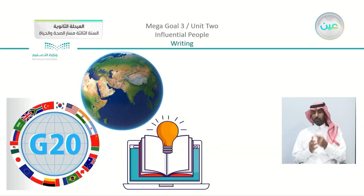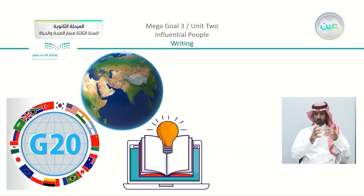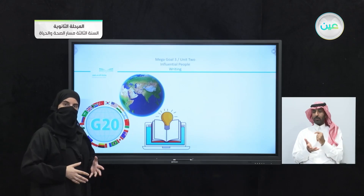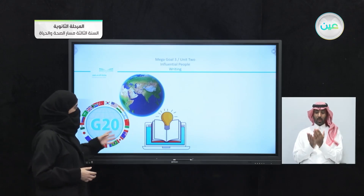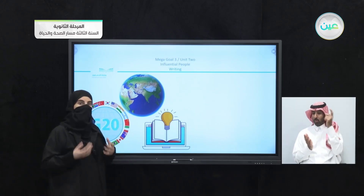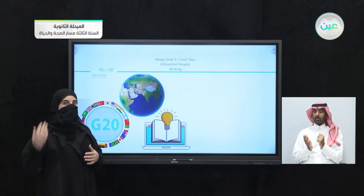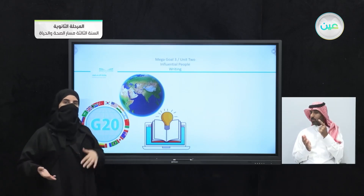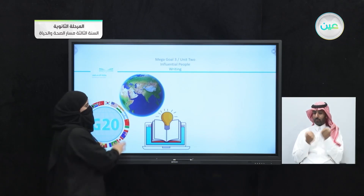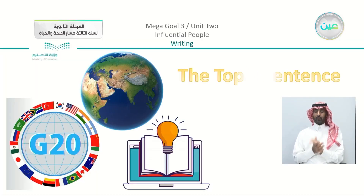Now in the writing lesson, what did we take? You can see that we have something about the G20. We have global issues or global problems that we discussed. We have something concerning writing. There was a text — you listened to me, you read with me. We had different tasks that we did within the text.